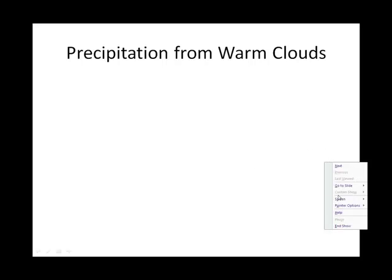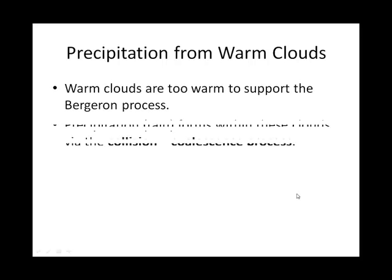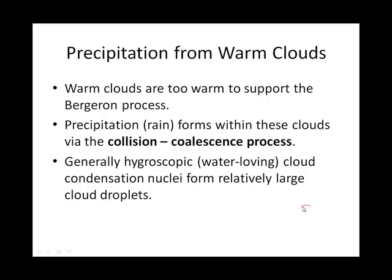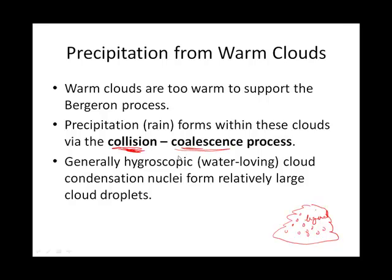We talked about cold clouds, which are clouds that have the Bergeron process going on throughout them. Warm clouds, then, are clouds where the temperature even at the top of the cloud is warmer than 32 degrees Fahrenheit, 0 degrees Celsius. So basically even at the top we have liquid water, and precipitation forms not by the Bergeron process but by something called the collision-coalescence process — where liquid water particles collide and coalesce, meaning they come together.